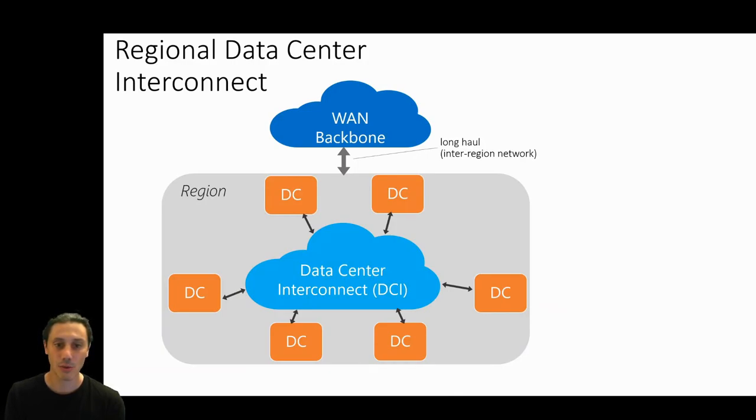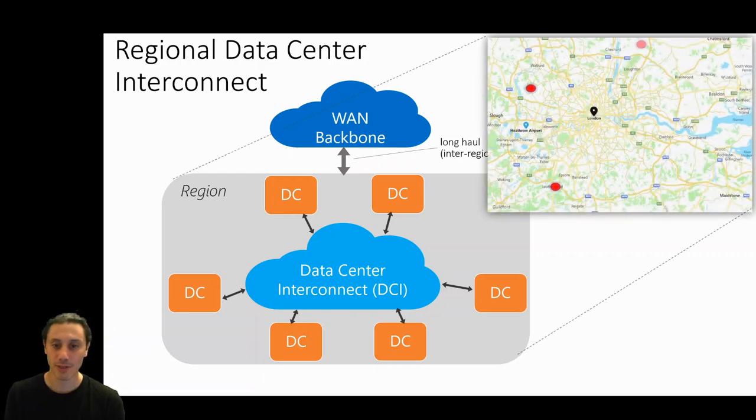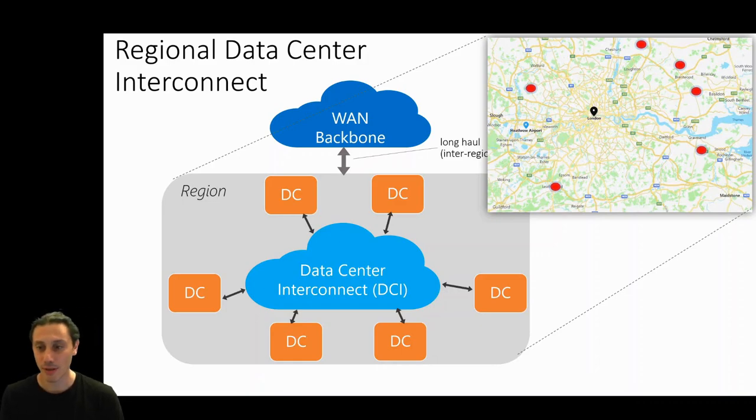In essence, what used to be internal data center links with a few hundred meters are now externalized connections of a few tens of kilometers across a metropolitan area. The map shows how the geography of such a region of six data centers might look like in the metropolitan area of London. Small data center facilities are placed around a densely populated area. Inter-region connectivity is provided with the traditional wide area network backbone.